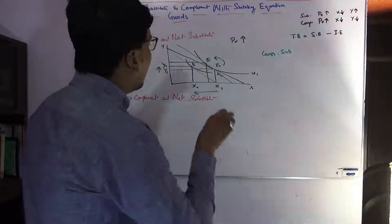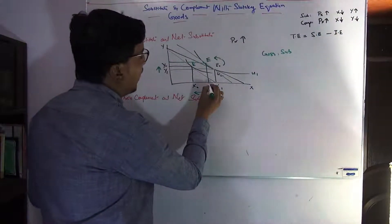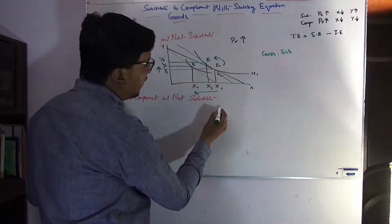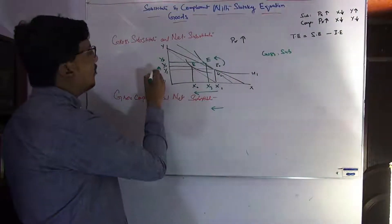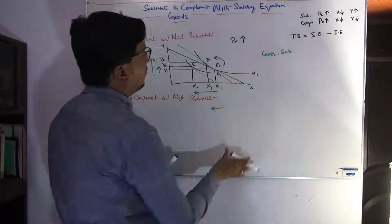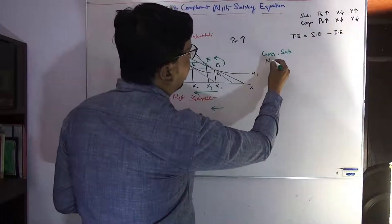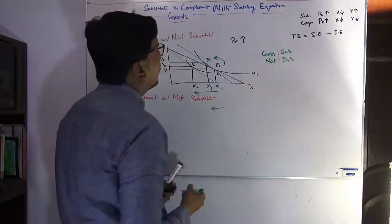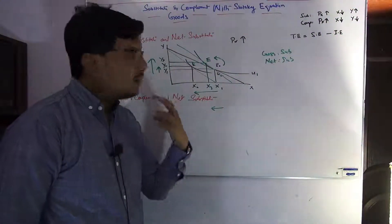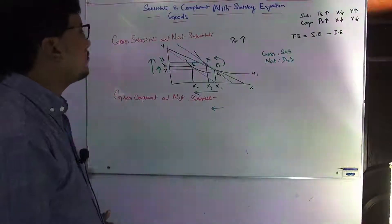At a gross level this good is substituted, and at a net level — after the income effect — the good is also substituted. This means good X will be called a pure substitute good, because at the gross level it is substituting X with Y, and at the net level it is also substituting X with Y.